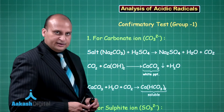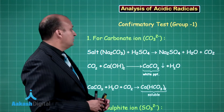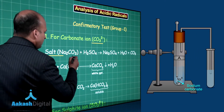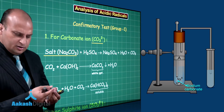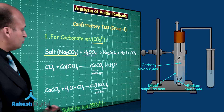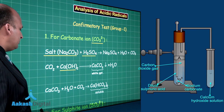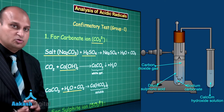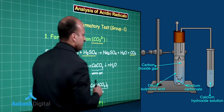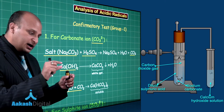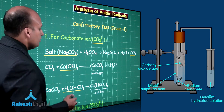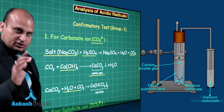Now let us talk about the confirmatory tests — starting with group 1. For the carbonate ion: you take the salt, make a solution, add H2SO4, which releases carbon dioxide gas. You then pass those vapors into calcium hydroxide solution, and you will get a white precipitate of calcium carbonate — that is your first observation.